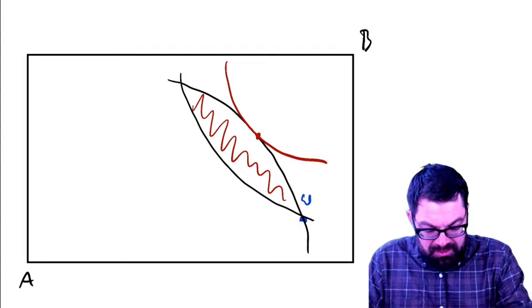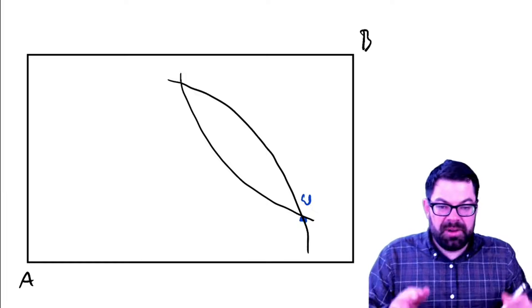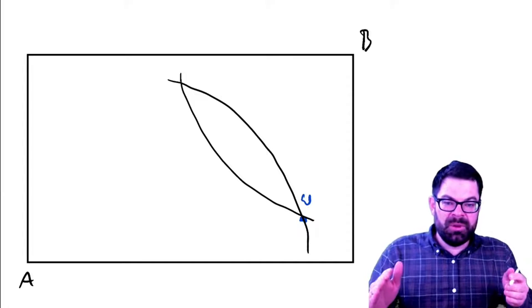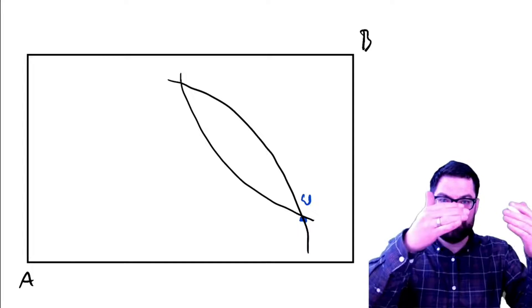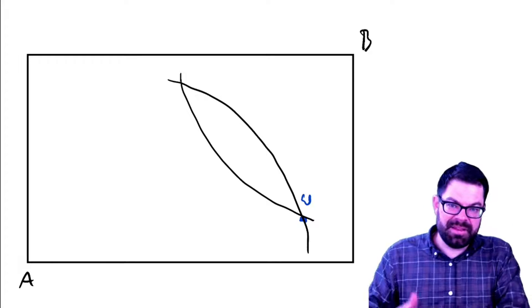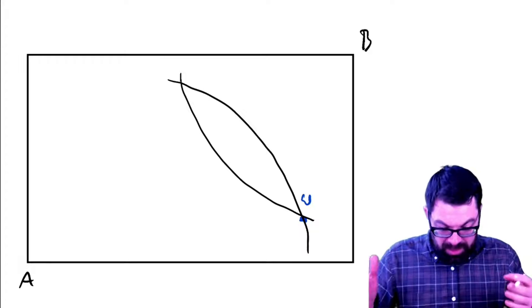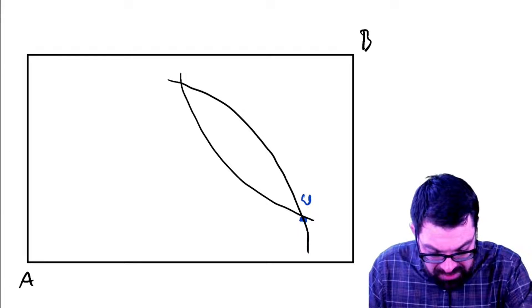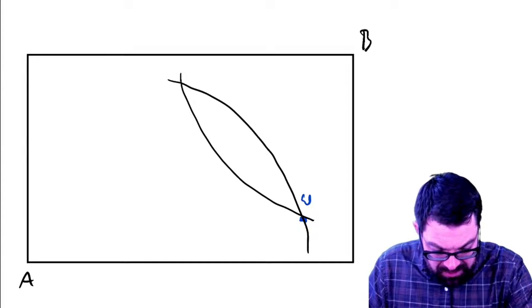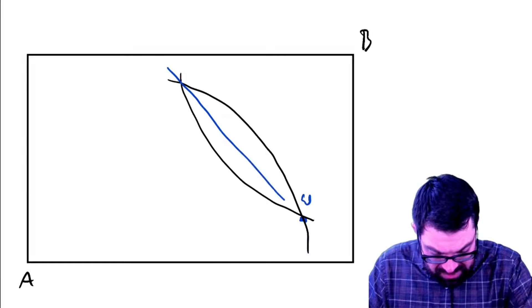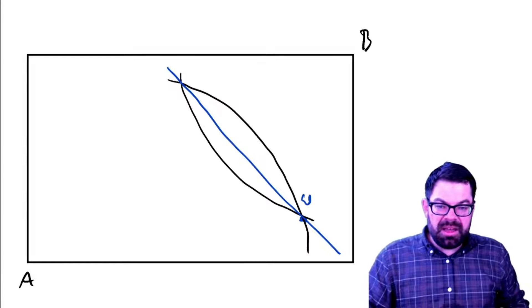Now where do we get to a Pareto efficient point? A Pareto efficient point is one where, once again, you can no longer make one person better off without making someone else worse off. So let's look at a point that could be a market equilibrium. Let's first of all introduce here a budget constraint that goes, as we've learned, through the endowment point.